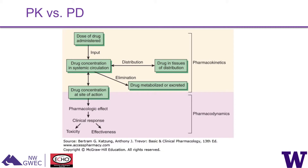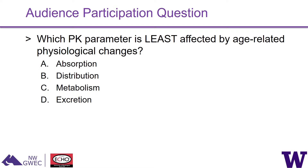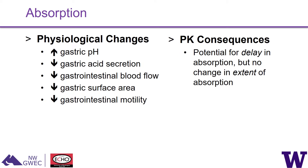A quick audience poll: which pharmacokinetic parameter is the least affected by age-related physiological changes — absorption, distribution, metabolism, or excretion? The correct answer is absorption. When you think about the one most affected, it's excretion. So keep in mind that absorption, while important, is probably the least affected by age-related changes.